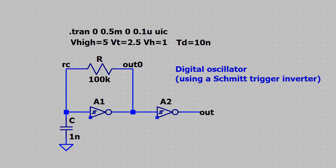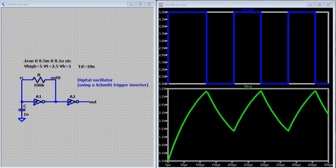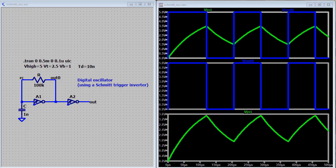Schmitt triggers, as seen in the last video, are used to transform slowly changing input waveforms into sharply defined, jitter-free output waveforms. When power is first applied to the circuit, the voltage across C is 0, and the output of the inverter is high plus 5 volts. The capacitor starts charging up toward the output voltage via R. When the capacitor voltage reaches the positive threshold of the inverter 3.5 volts, the output of the inverter goes low to 0 volts.